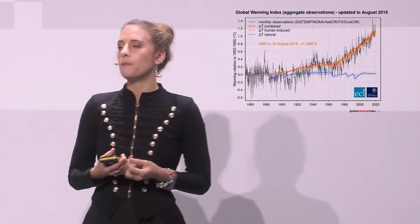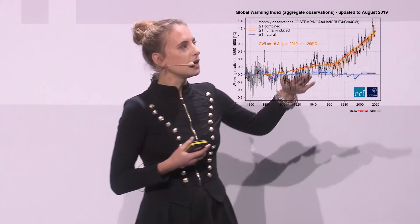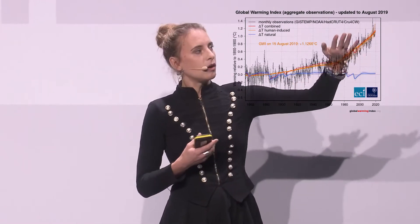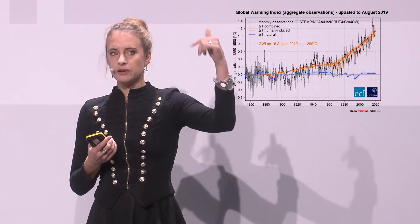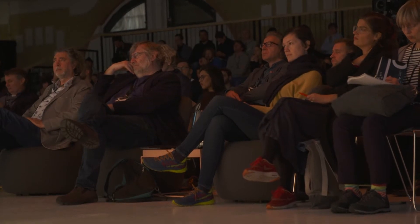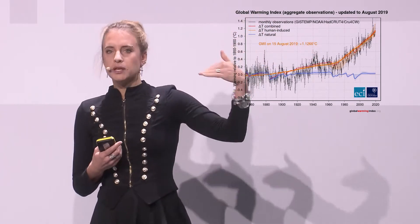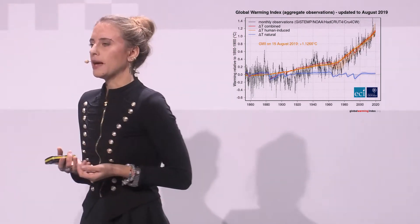If you look at the orange line, that is if we only take human or man-made forcings into account — from burning fossil fuels, greenhouse gases, but also aerosols — we get this very straight orange line. We also can't explain everything we see with just human forcings, because then we don't get this interannual variability. But only when we combine the two — natural forcings and man-made forcings, which is the red line — can we simulate and explain what we observe. And that is the key idea behind attribution.